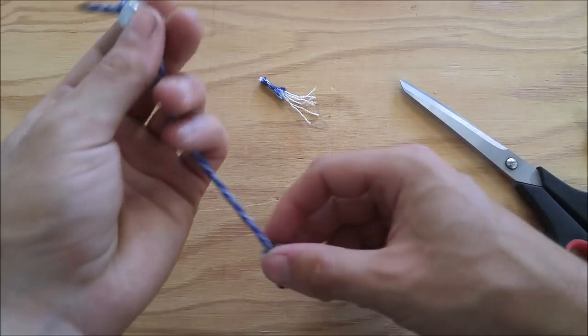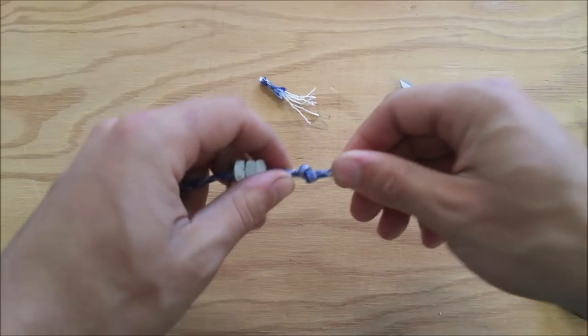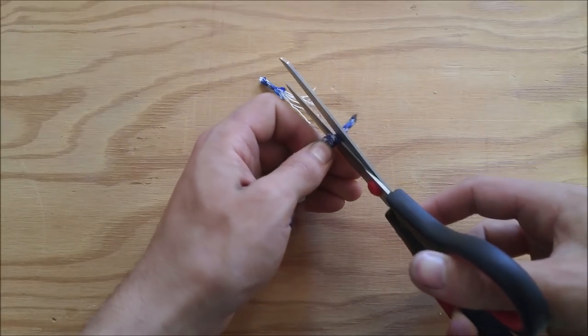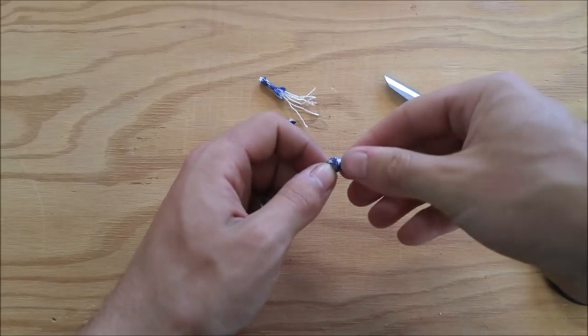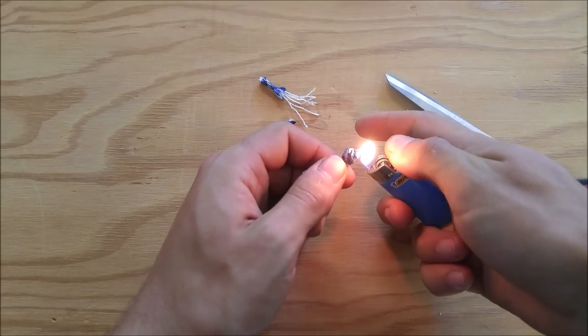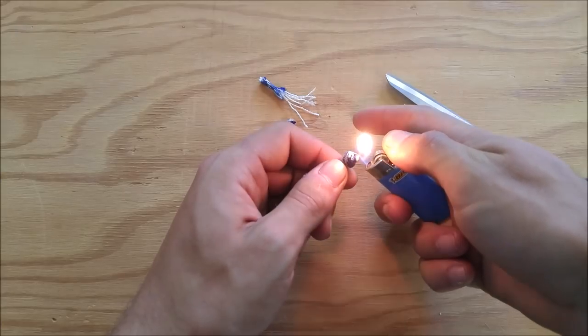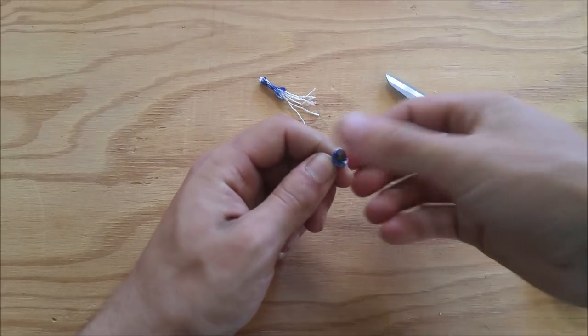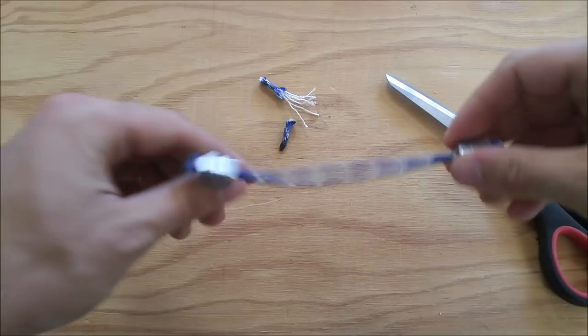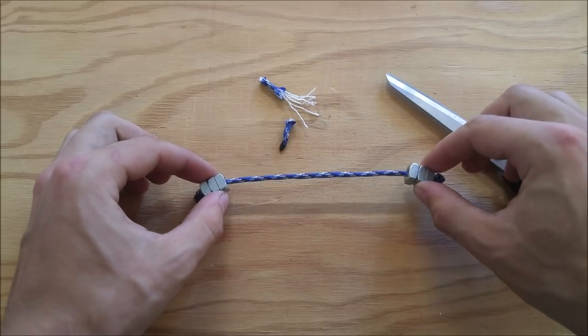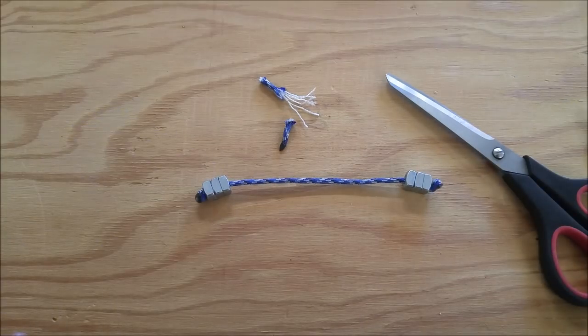Also keep in mind that melting paracord does put off some toxic fumes. So try to do this in a well ventilated area. I'm just going to do the same thing on the other side. And there you go. You now have a fully functional set of beglery ready to play.